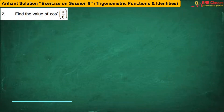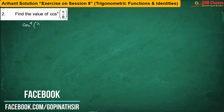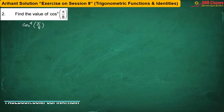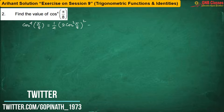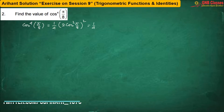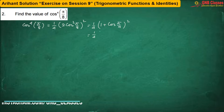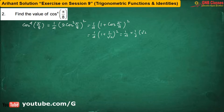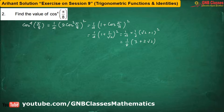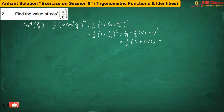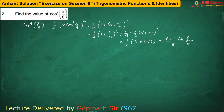Here we have to find out the value, which can also be written as: now 2cos²θ can be written as 1 + cos2θ. Putting the value of cos(π/4) we get the final answer. Let us move for the next problem.